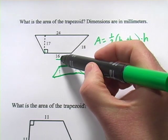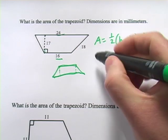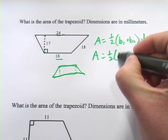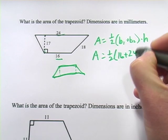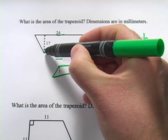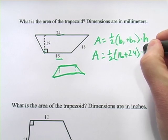In this case, the two bases are 16 and 24, so let's go ahead and plug those in the formula. 16 plus 24, and the height here is this dashed line, that's 17, so times 17.